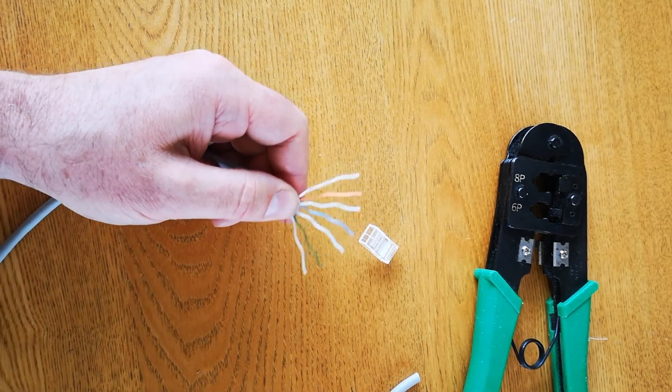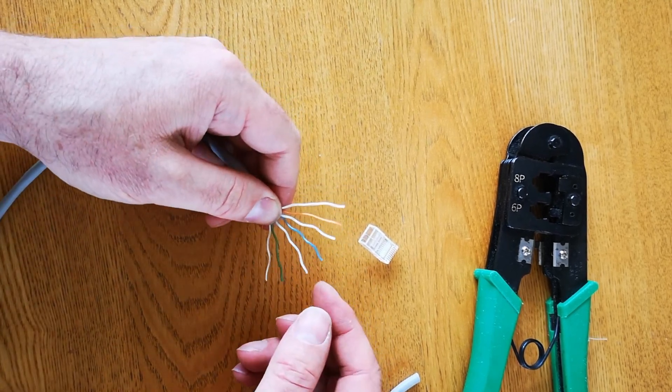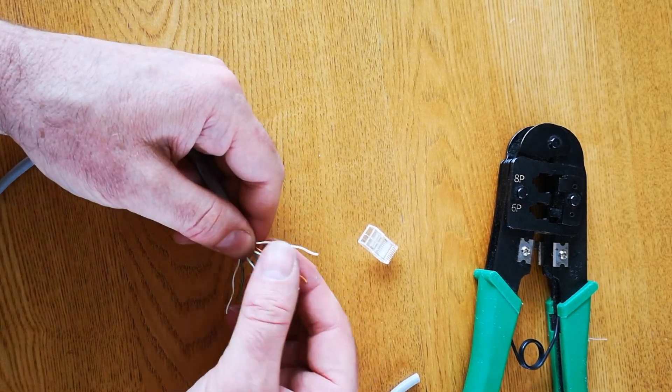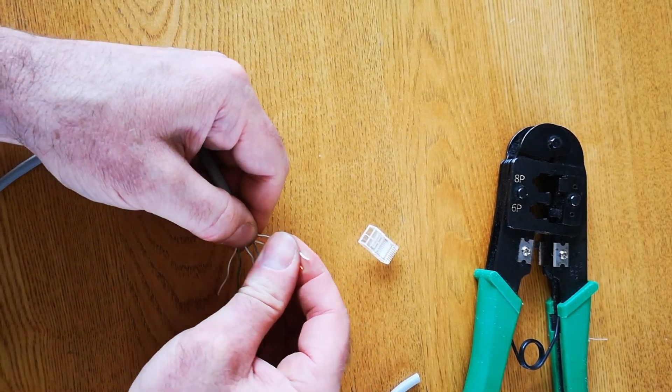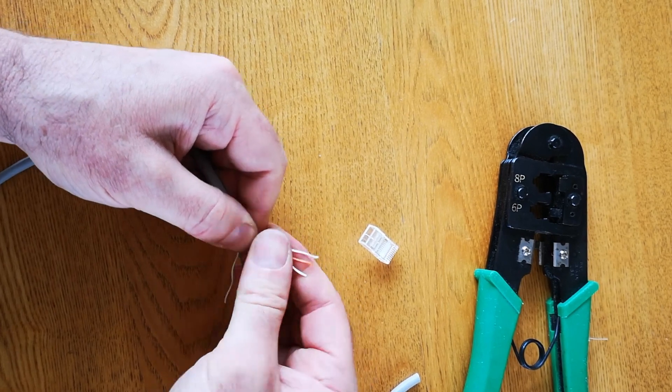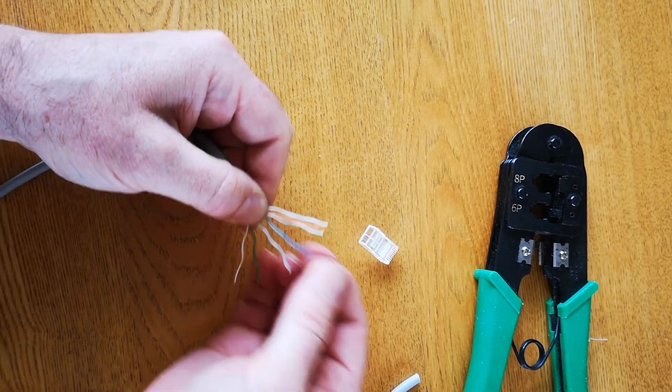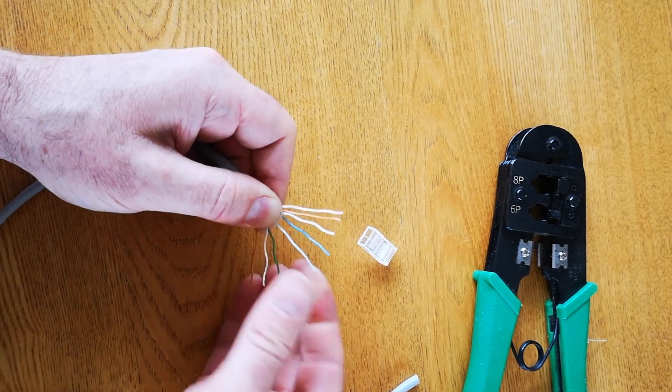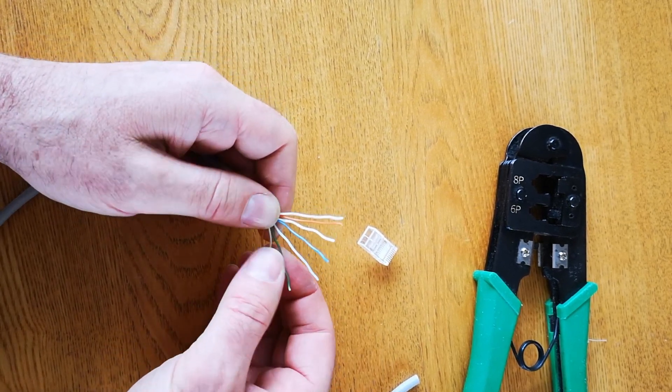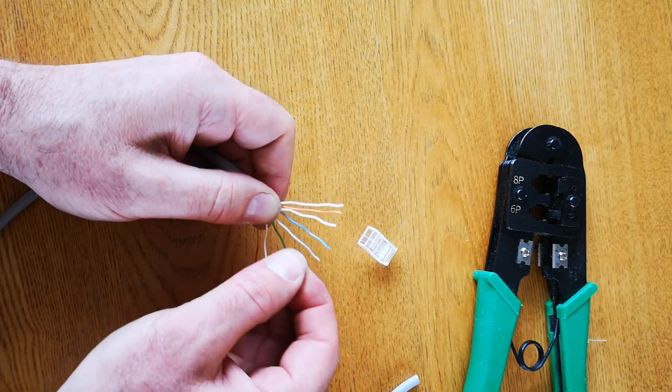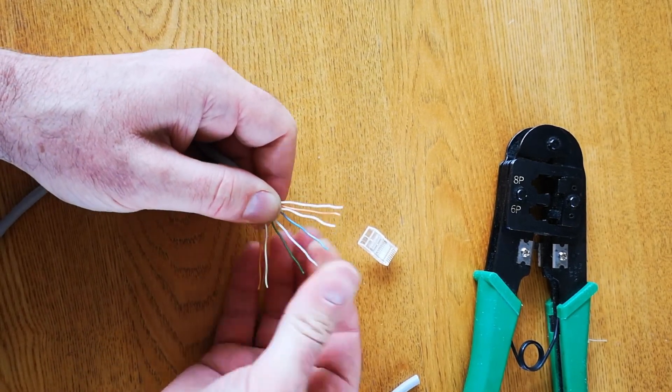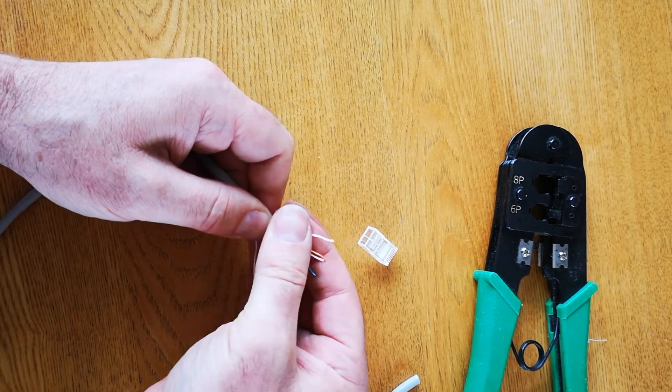You can see that all the wires are very wiggly. Wiggly wires are no good. They need to be straight. So just spend a minute straightening the wires. And trying to bring them close together to look like a ribbon. So I'm just going to use my fingers here to straighten all the wiggles out of the wires. And you can see I'm just starting to get them looking a little bit straighter.